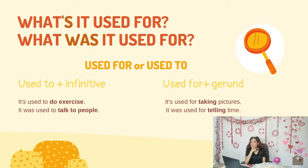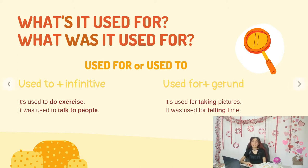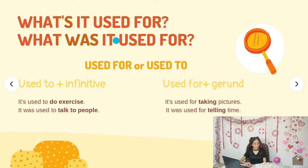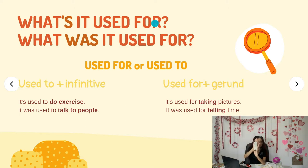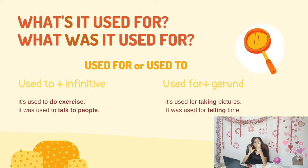Let's begin with today's class. For today we have: what is it used for? and what was it used for? Let's pay attention to the first two questions. 'What's it used for?' is the same as saying 'what is it used for?' — it's just contracted with an apostrophe. This is a question in the present. For example, if I show you an object and I ask 'what's it used for?', you'd answer — like this remote control is used to turn on the air conditioner.